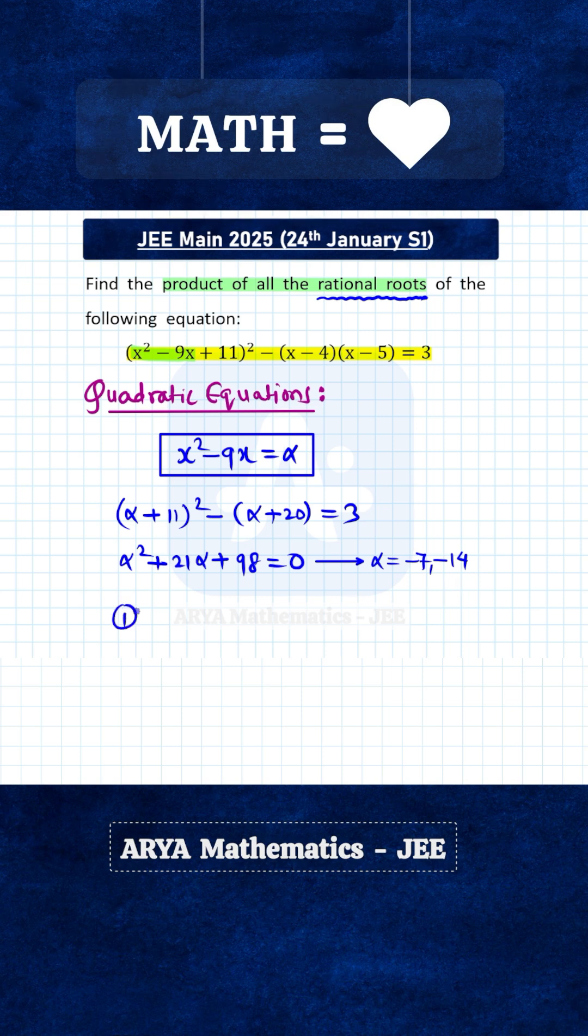If alpha is minus 7, x square minus 9x will be minus 7. So that means x square minus 9x plus 7 equals 0. For this equation, the discriminant is not a perfect square. The discriminant will be 81 minus 28, which is 53, not a perfect square. So therefore, we will get irrational values of x in this case. Remember we have to find product of all the rational roots. We are not getting any rational root in this first case.